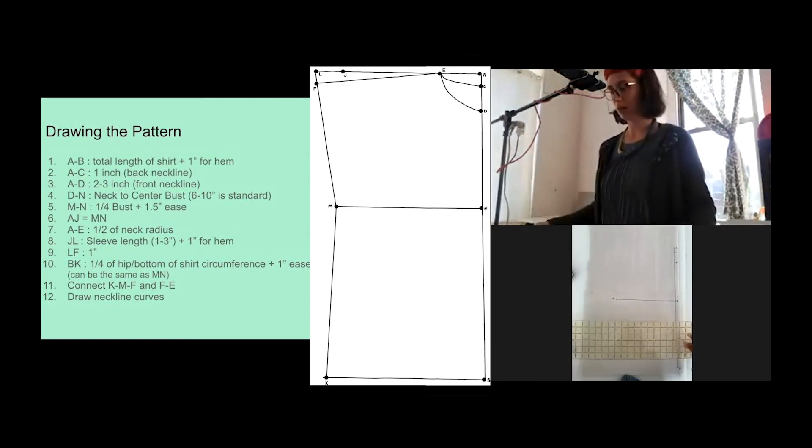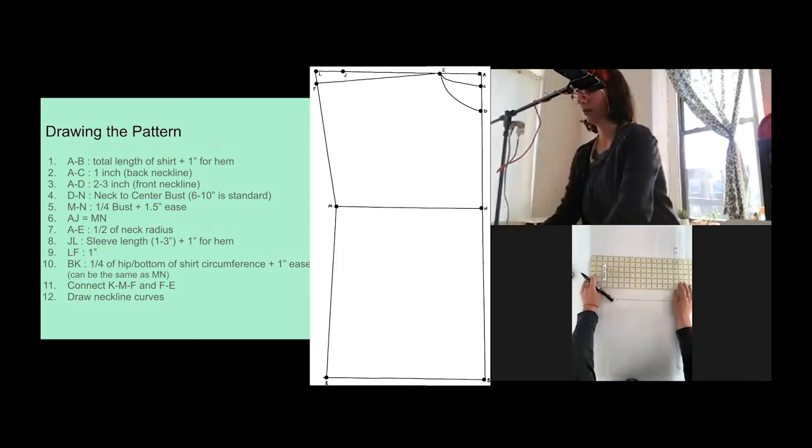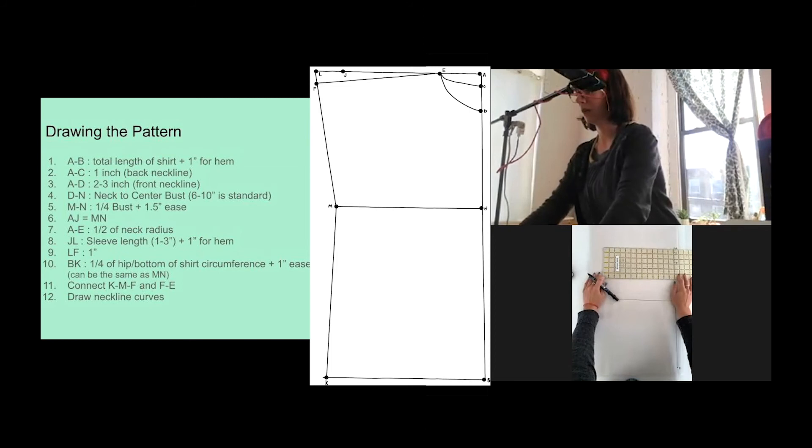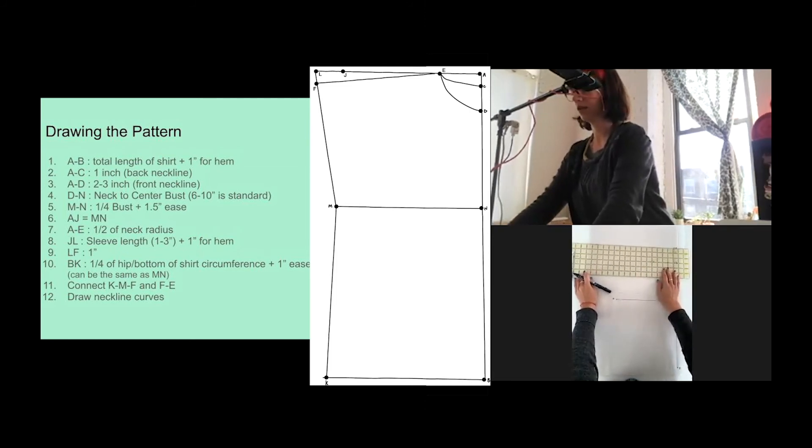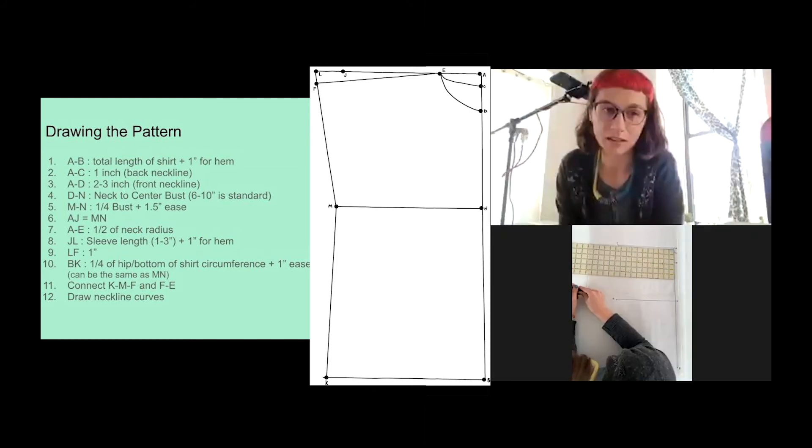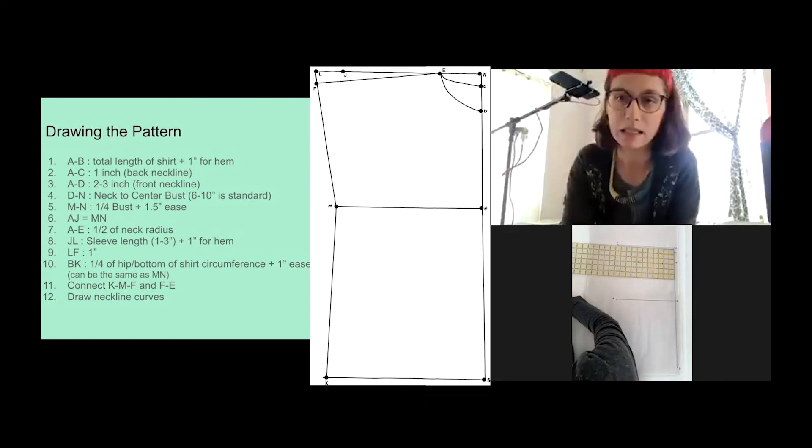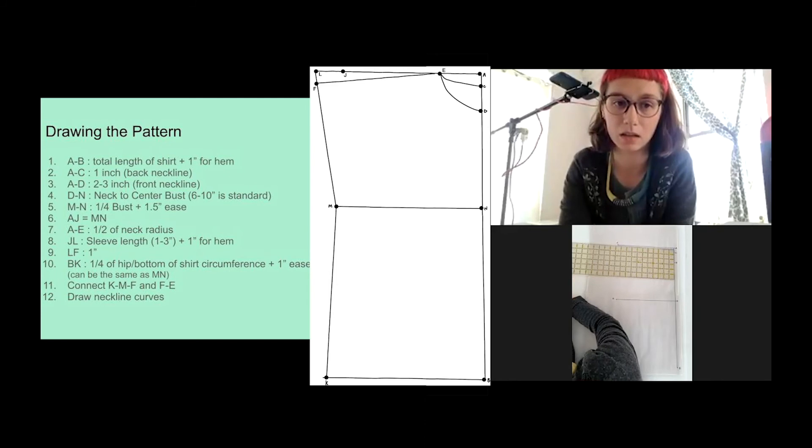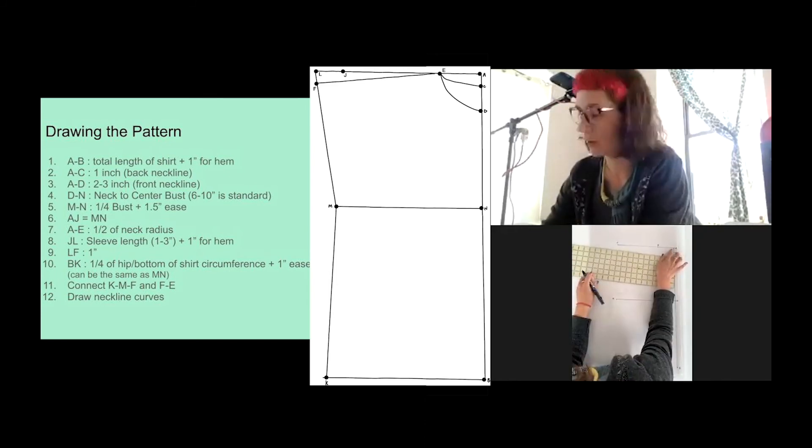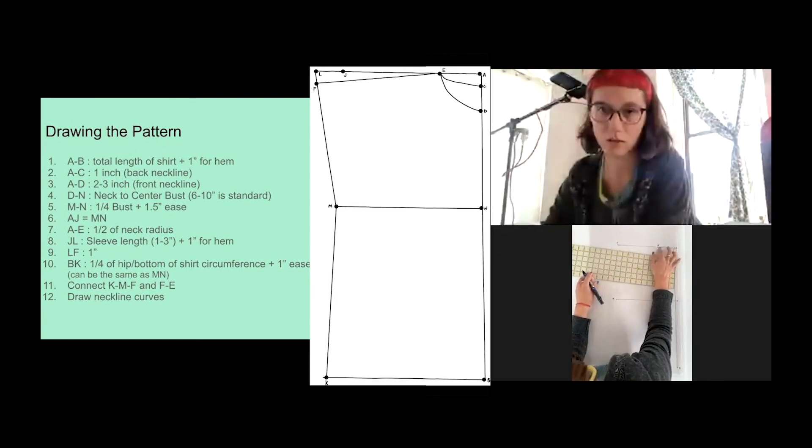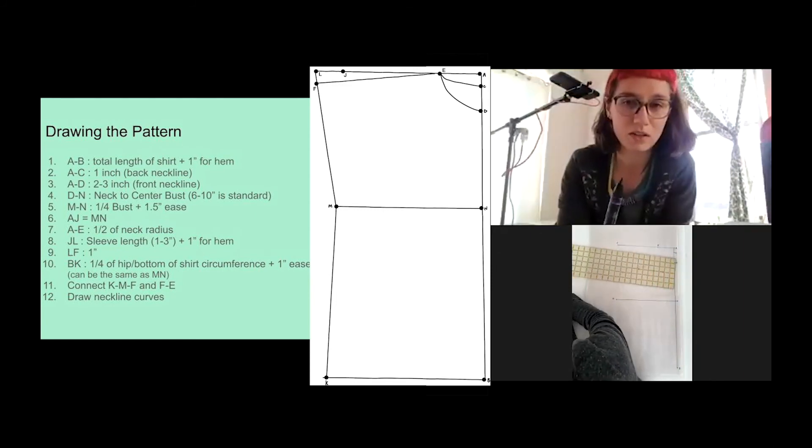And then I'm going to do the exact same measurement across the top. So again, perfectly perpendicular to that first horizontal line from A. I'm going to measure the same amount across and mark it J. So once we have A to J done, we will mark E. So E is going to be the half of your neck radius. So that's going to be where your necklines start.